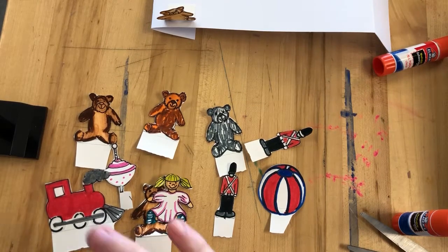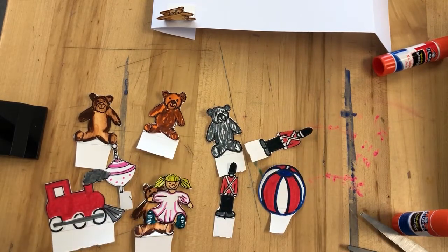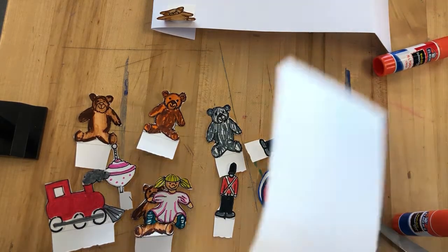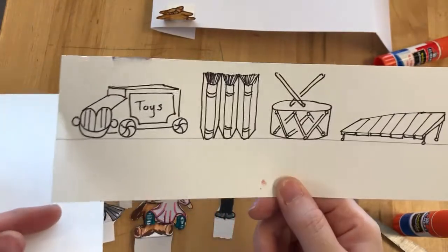Hi Year 2, we're now at the stage where hopefully you've managed to make two strips of toys for your toy shop. Two strips of drawings that look a bit like this and you've got them colored in.